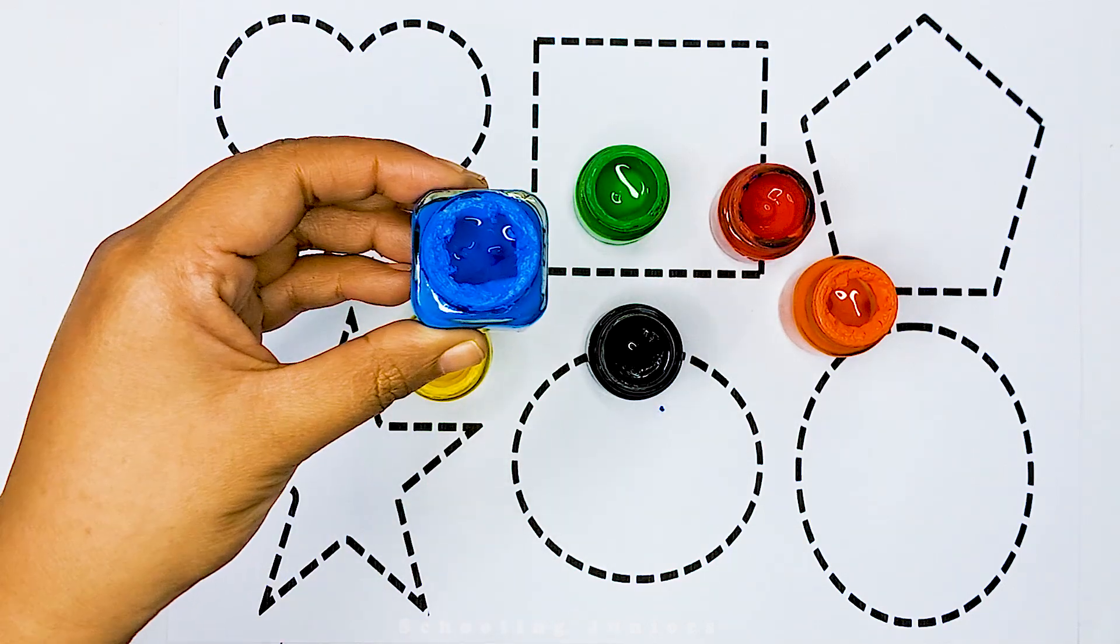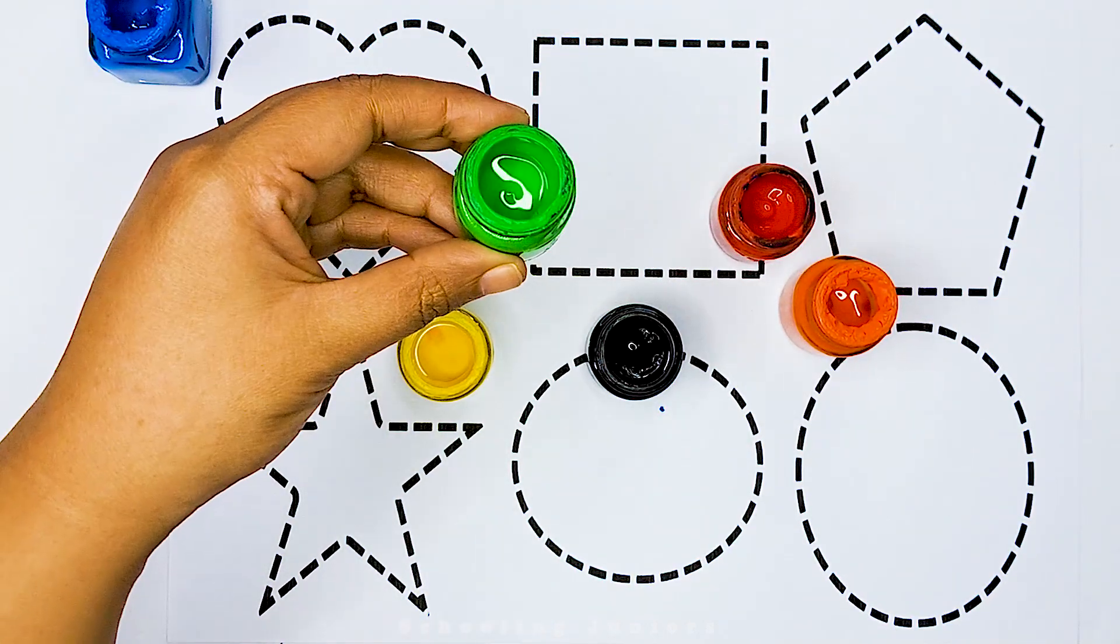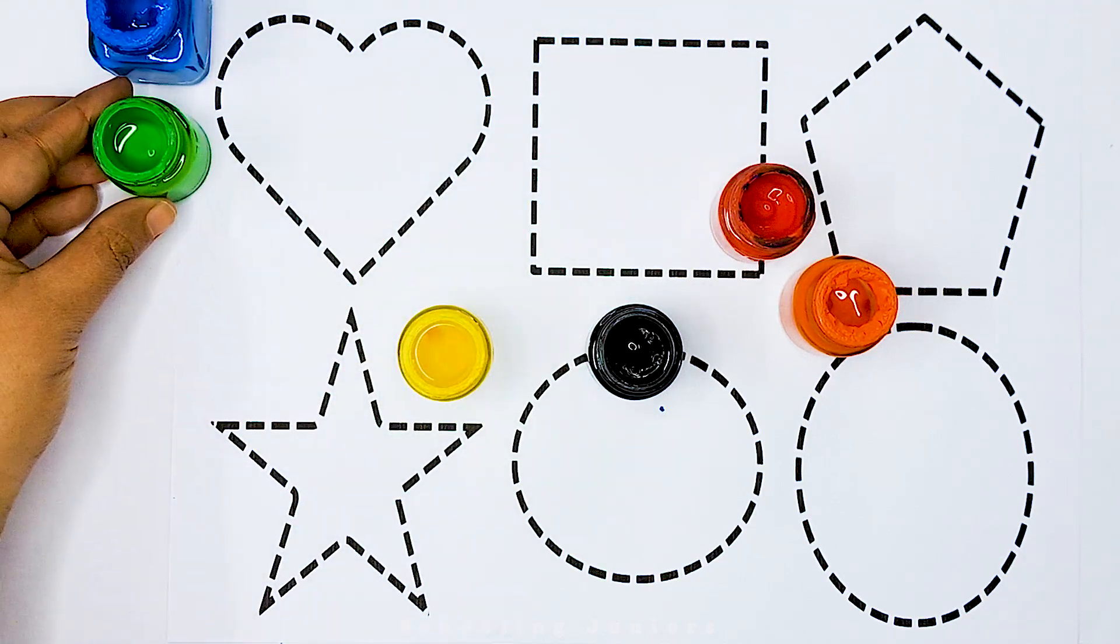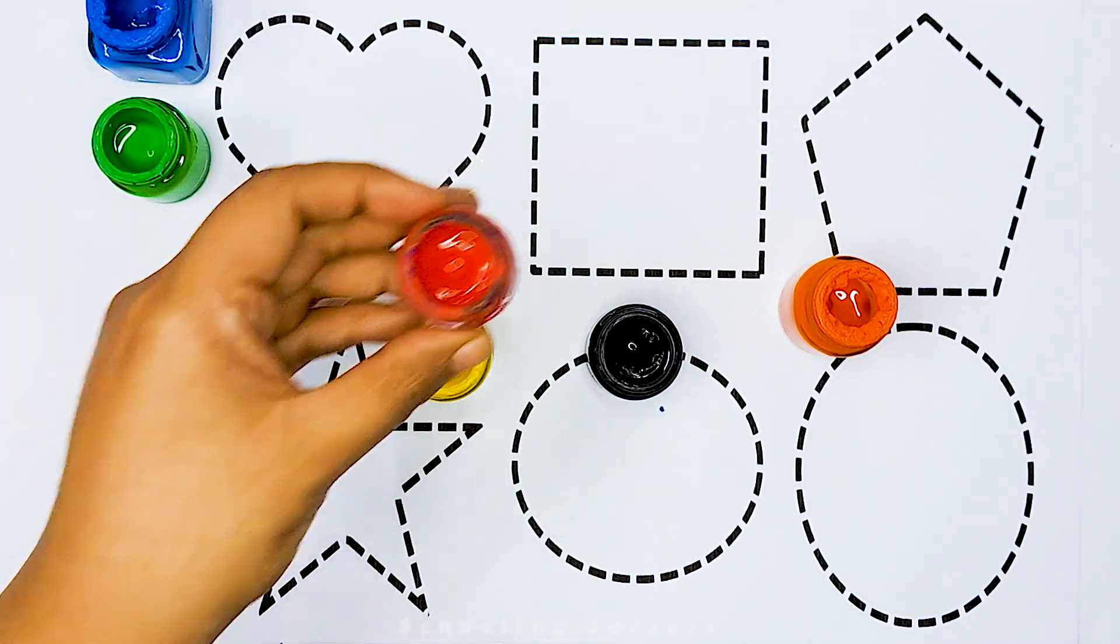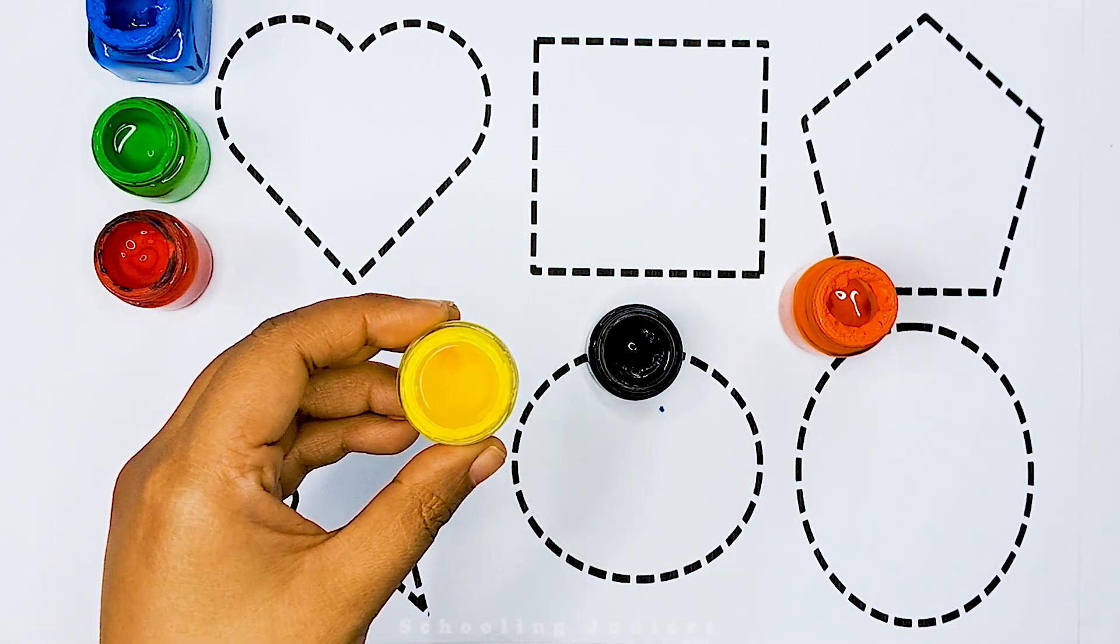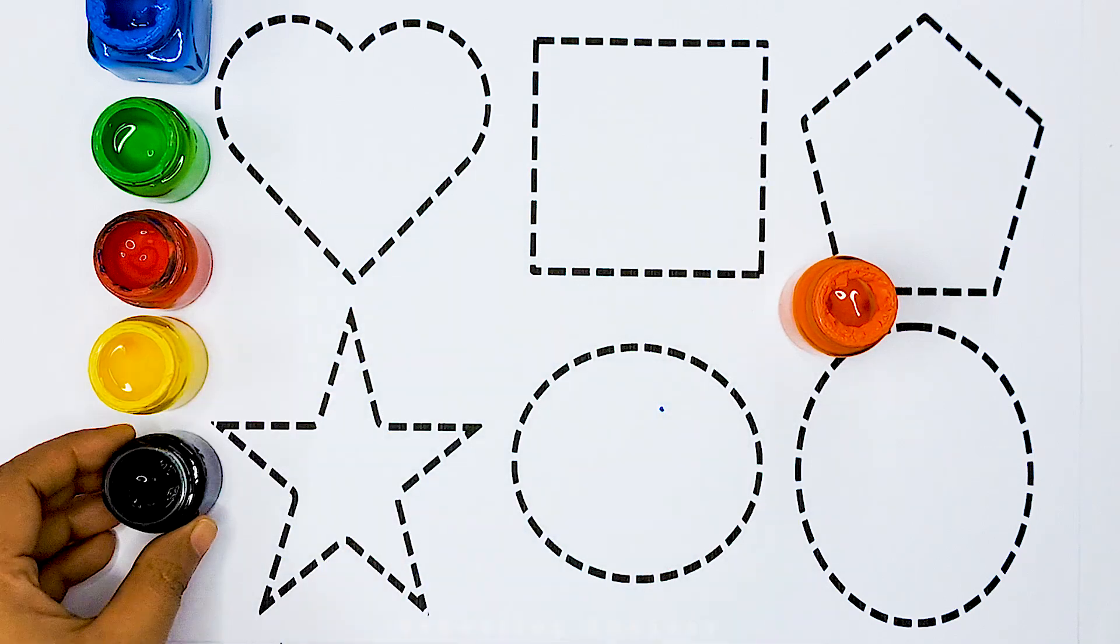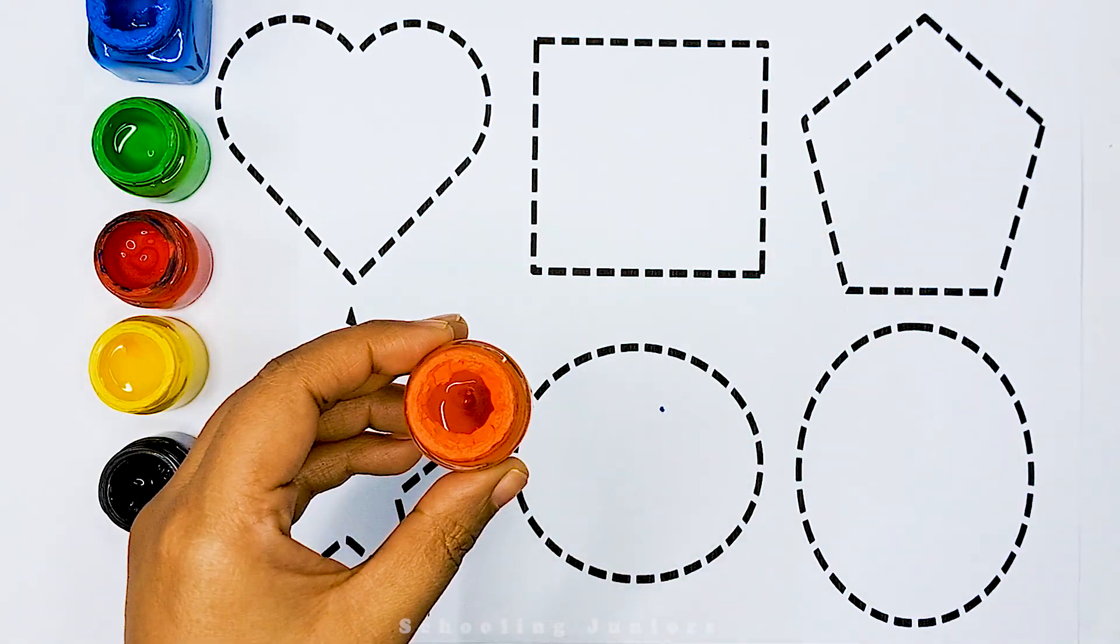This is blue color. This is green color. This is red color. This is yellow color. This is black color. This is orange color.